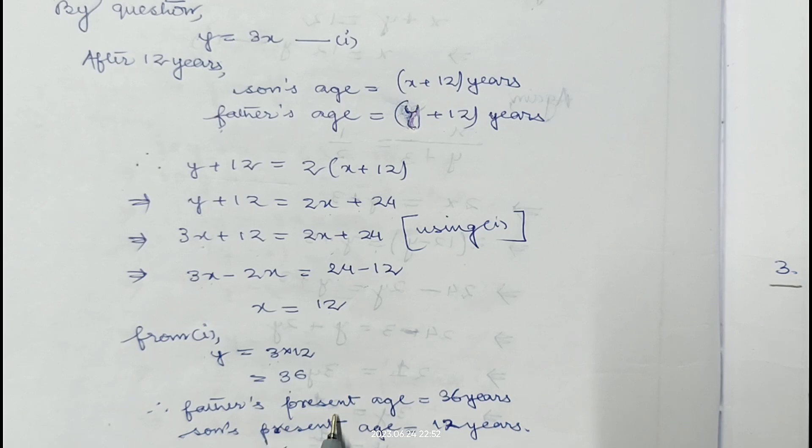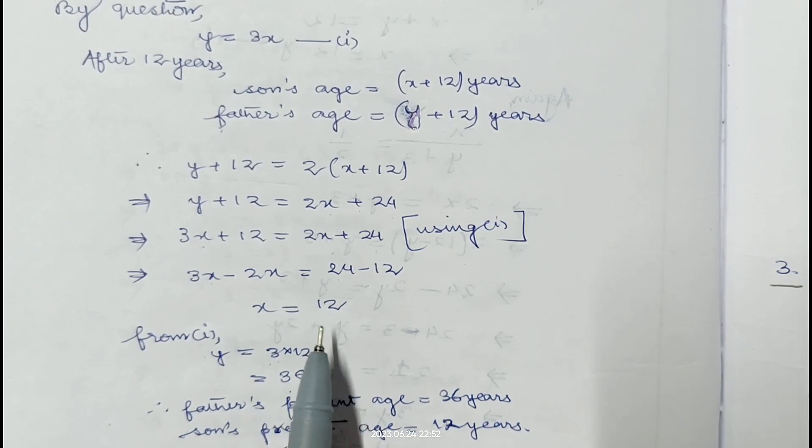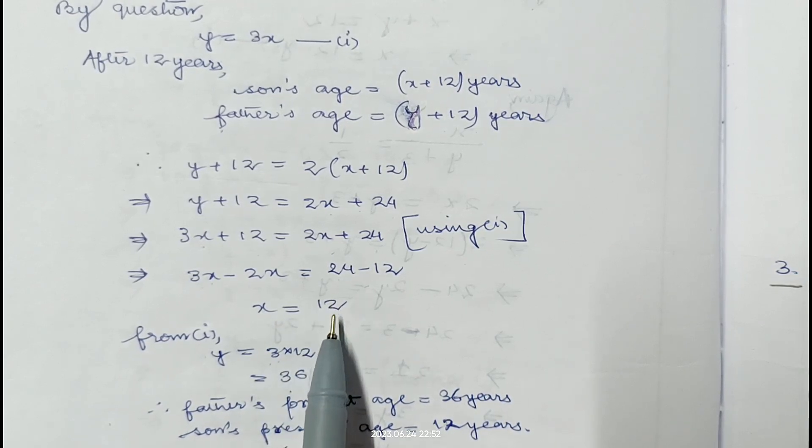Therefore, father's present age is 36 years and son's present age is 12 years.